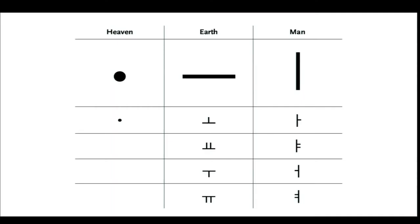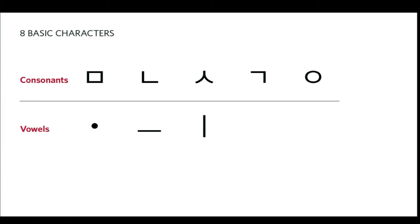Furthermore, the vowel sounds were constructed from three symbols of heaven, earth, and man. Heaven was seen as round, earth as flat, and man connecting both heaven and earth was shown standing. These eight symbols — the five consonants and three basic vowels — were the basis from which the remaining 20 letters were composed by adding one or more strokes to the basic shapes. The stronger the sound, the more visually complex the characters become.